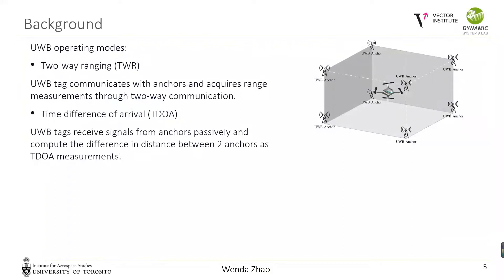For a UWB-based localization system, we have UWB modules installed in the space, which are often called anchors. The two main ranging modes are two-way ranging and time difference of arrival, also called TDOA. In two-way ranging, the UWB module mounted on the robot — a so-called tag — communicates with anchors and acquires range measurements through two-way communication. In TDOA, however, UWB tags receive signals from anchors passively and compute the difference in distance between two anchors as TDOA measurements. We mainly focus on TDOA-based localization, since it can allow multiple robots to localize themselves simultaneously.